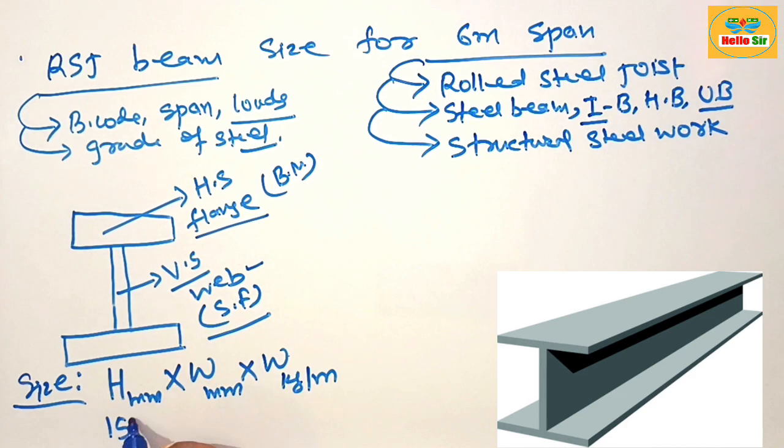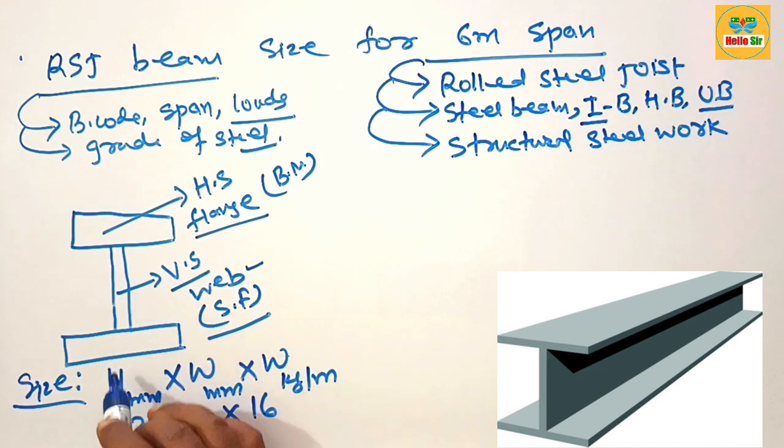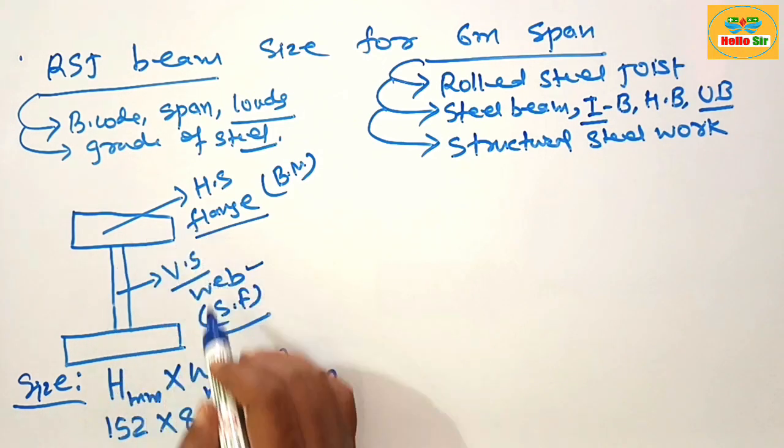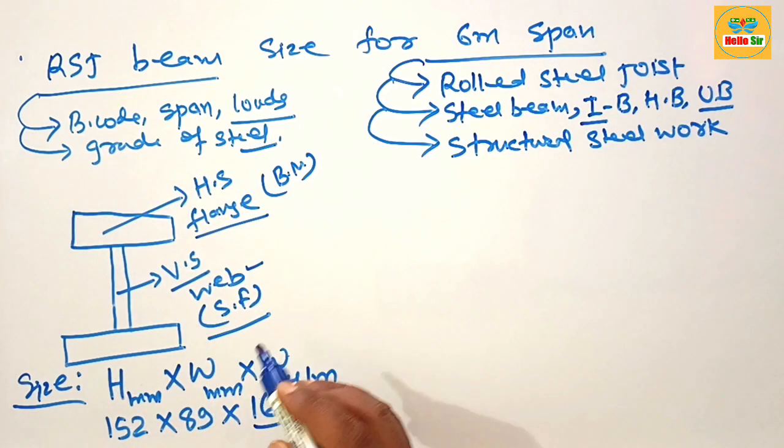Like that 152 x 89 x 16. It means 152 is vertical height expressed in mm, 89 is width of this flange in mm, and 16 is weight of RSJ beam in kg per meter.